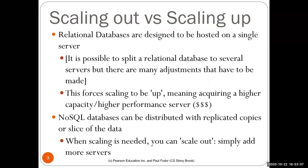NoSQL databases can be distributed with replicated copies or slices of data called shards on multiple servers, because you don't have complicated joins — you only query one table or equivalent of a table. When you need to scale the operation with more users and more data, you can simply add more small servers. So there are advantages of both: sometimes you need more joins and then you need relational databases, and sometimes you just have more data but very simple data.